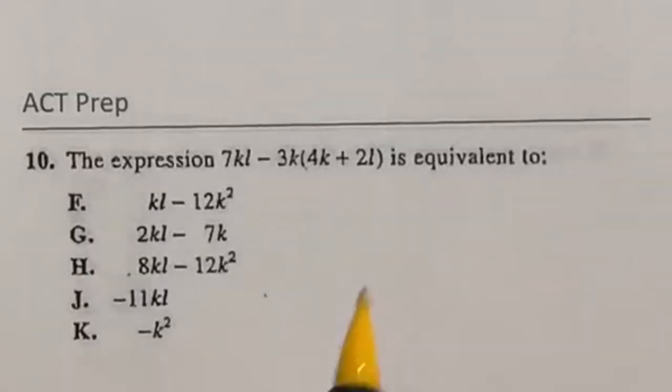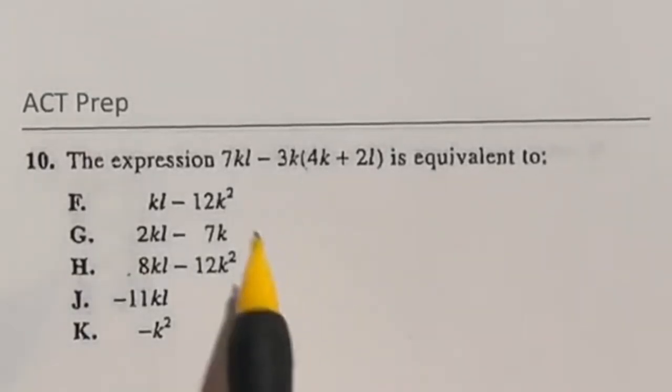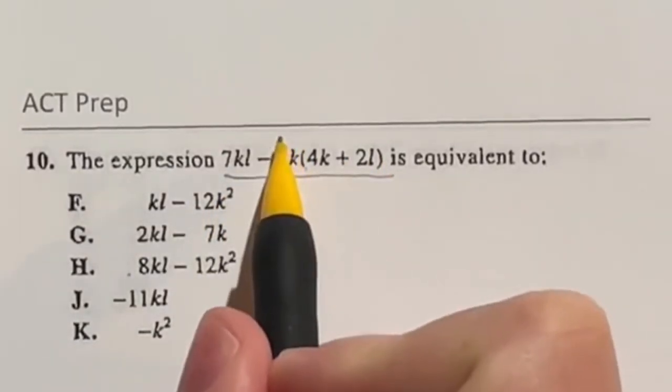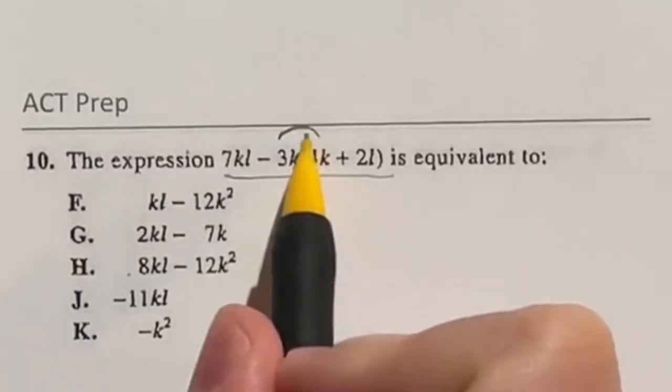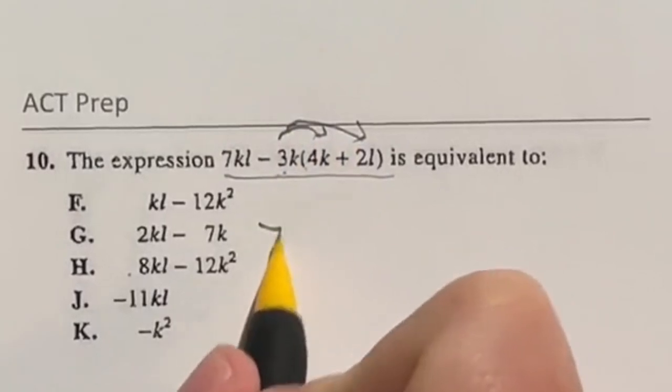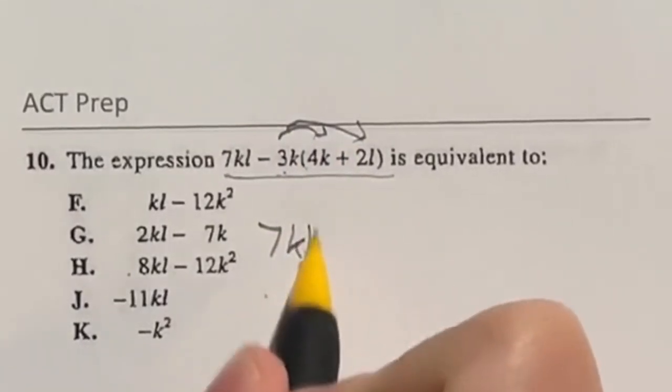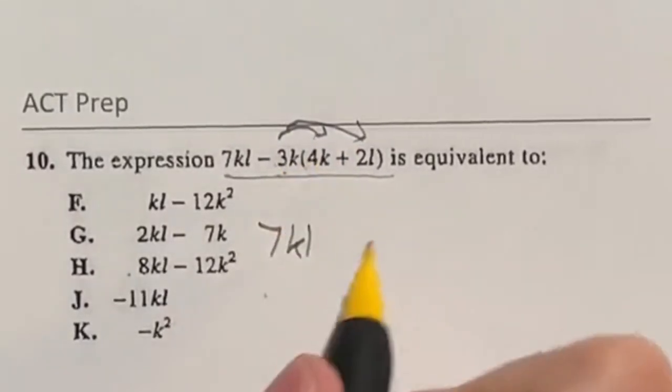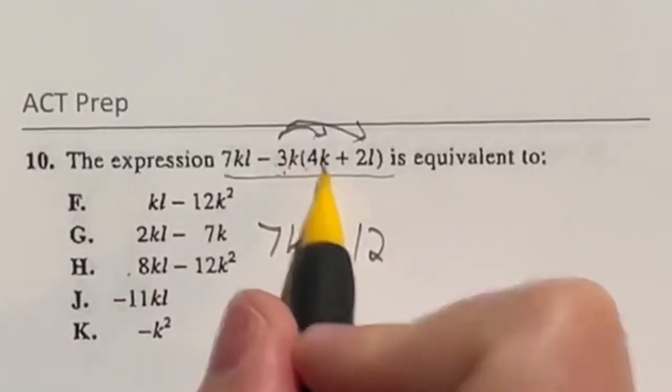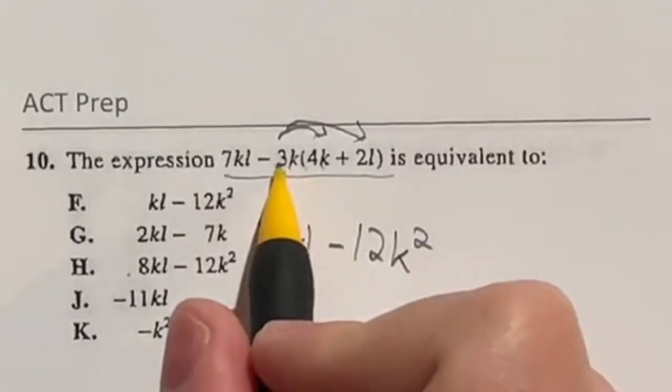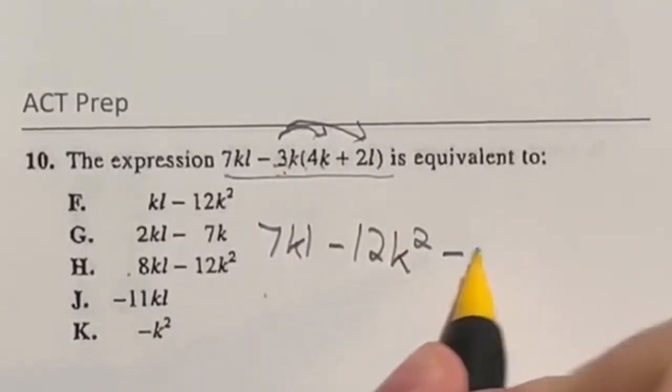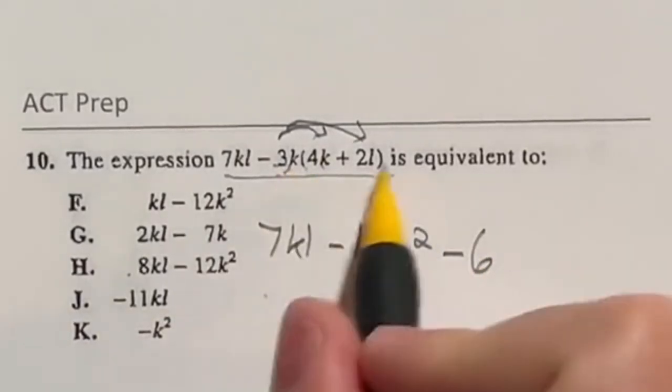So this is actually just a distributing question then combining like terms. So the first thing we have to do when finding an equivalent expression to this guy is to distribute this negative 3k to both of these terms. Now don't forget that it's negative because that's going to be important. I want to rewrite my 7kl. Then from there negative 3 times 4 gives me negative 12, and because there's a k here and k here that's going to be k squared. And then we have the negative 3 times the positive 2 so that's going to give us negative 6 and then we have the k and l there.